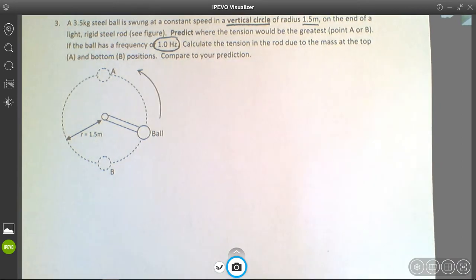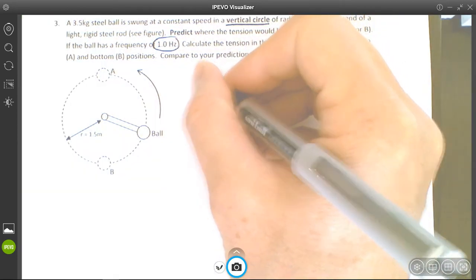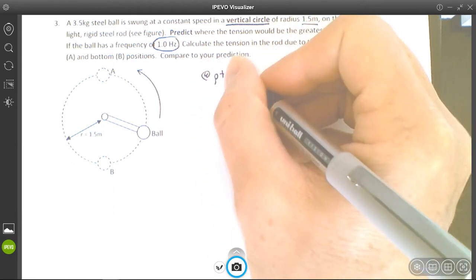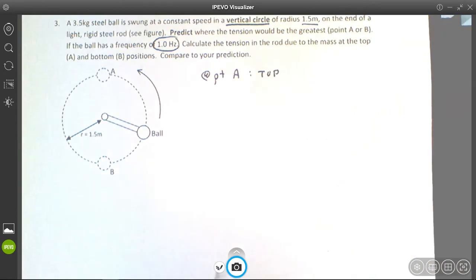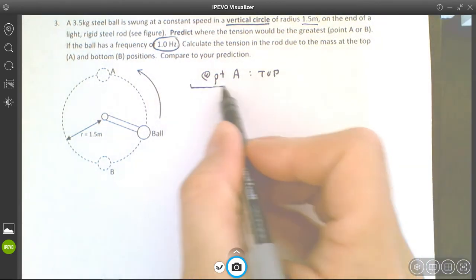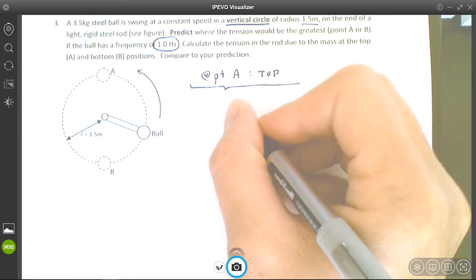Hopefully you've made your prediction. Now what we're going to do is draw the free body diagrams for both situations. Let's look at point A at the top. We're going to look at the free body diagram.